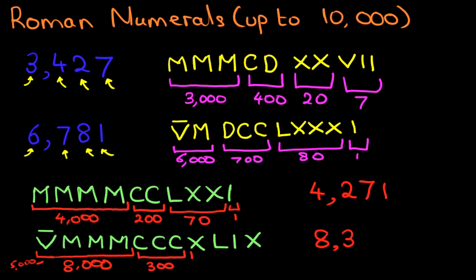Then we've got X and L. What is that? That is 10 before 50. L is 50. So that is 40. And lastly, we've got IX. What is IX? That is 1 before 10. That number is 9. So this Roman numeral is 8,349.